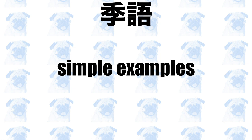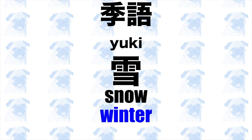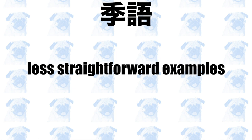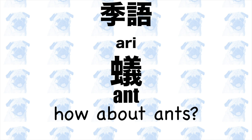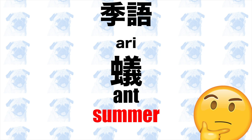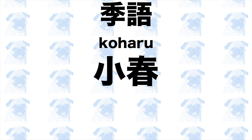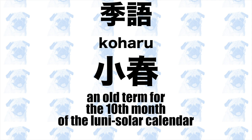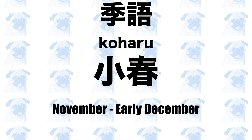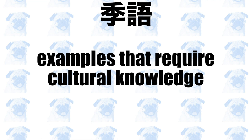For example, the word yuki (snow) is obviously associated with winter, while sakura (cherry blossom) symbolizes spring. However, it can be quite difficult at times to tell which season a given word expresses. For example, which season do you associate ants with? They can be seen throughout the year, but apparently ants indicate summer. Some kigo can also be misleading — for instance, the word koharu, which literally means 'little spring,' is a kigo of winter, not spring. This is because koharu is an archaic term for the tenth month of the lunisolar calendar, corresponding to a period between November and early December in the Gregorian calendar. You also need to be familiar with Japanese customs and traditions in order to tell which season a word implies.